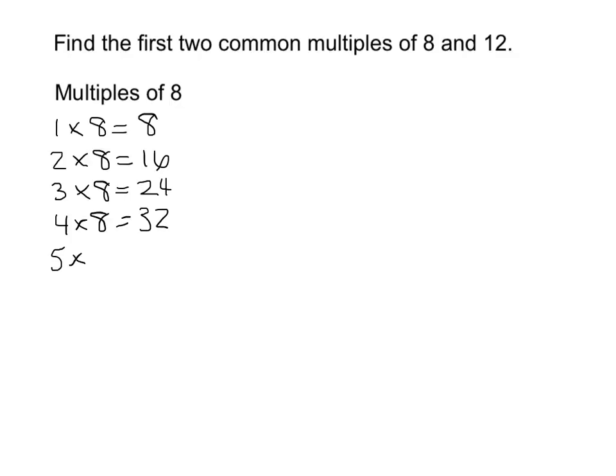4 times 8 equals 32. 5 times 8 equals 35. Oops, no it doesn't. It equals 40. 6 times 8 equals 48. 7 times 8 equals 56.